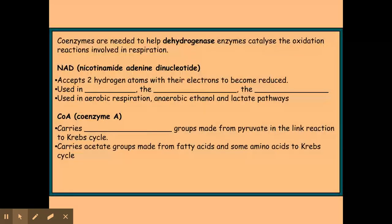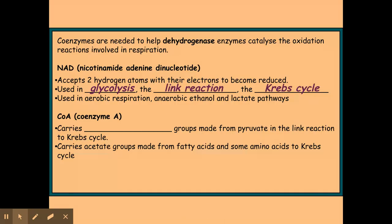On this slide, as you can see, we've got NAD. Don't really need to know what that stands for — that is just there for you if you're interested. NAD accepts hydrogen atoms and their electrons in order to become reduced NAD. NAD is used in glycolysis, it's also used in the link reaction, and it's also used in the Krebs cycle. So in all three parts of respiration, NAD is reduced.